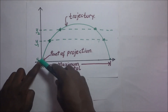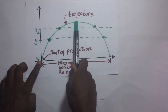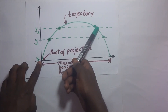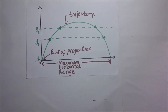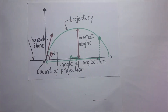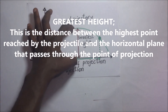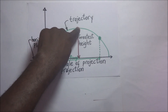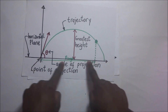As the ball moves upward, it will reach a certain maximum height beyond which it can no longer go up, and then gravitational forces will cause it to start coming back down. That maximum height is what we call the greatest height. By definition, the greatest height is simply the distance between the highest point reached by the projectile and the horizontal plane through the point of projection.